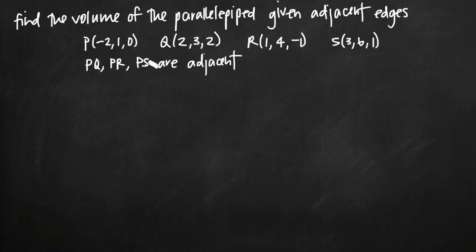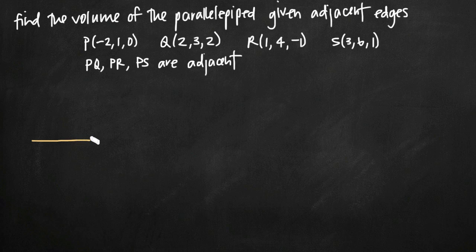What that means is that they all three start at the same corner of the figure and go in different directions, and that's very convenient because what that does is it defines for us, essentially, the length, width, and height of our parallelepiped figure. So if we have some parallelepiped figure like this, we have a vector here, a vector here, and a third vector going out this way.